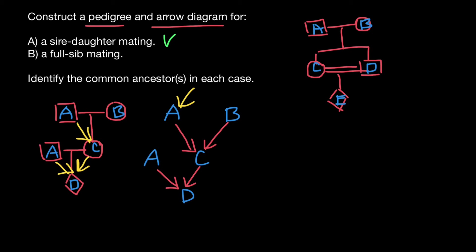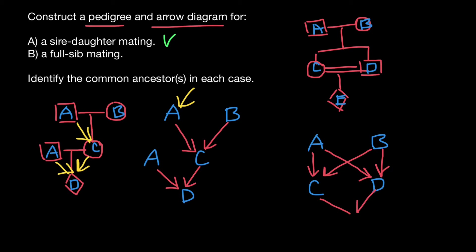Now let's show the same pedigree as an arrow diagram. Here we have father A, mother B, and the siblings C and D. The gene flow is as follows: father contributes half of the genome to C; mother contributes half of the genome to C; father contributes half of the genome to D; and mother also contributes half of the genome to D. And both C and D contribute half of the genome to the progeny E.